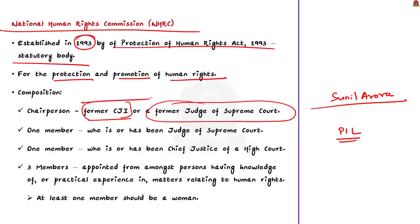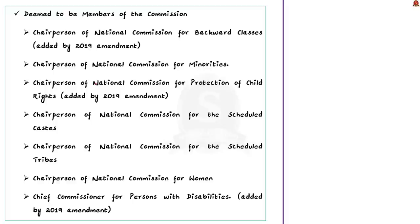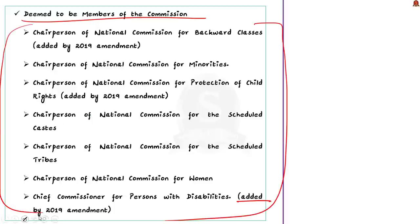In addition to the chairperson, there are also members of the National Human Rights Commission. One member is to be a current or former Judge of the Supreme Court, and one member is to be a current or former Chief Justice of the High Court. Alongside this, three other members are to be appointed from amongst people having knowledge or practical experience in matters relating to human rights. Out of these three members, at least one member should be a woman. In addition, the chairpersons of various other commissions are also deemed to be members of the National Human Rights Commission. The list of commissions whose chairpersons are eligible to be members of NHRC are given for your reference.